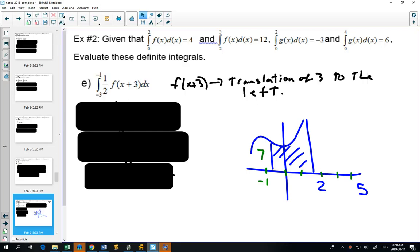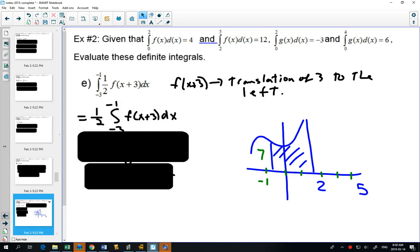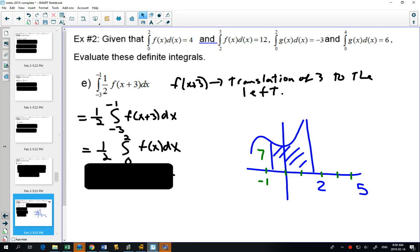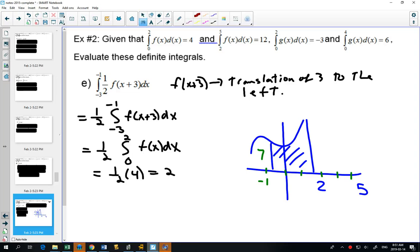So what we're going to think about in this one, we're going to think about that translating 3 to the left. We can bring the 1 half out in front, because that's a property. And so if it's been moved 3 to the left, and it's from minus 3 to minus 1, moving it back 3 to the right, f of x would have originally been between 0 and 2. And that was one of the ones that was given to us. The area from 0 to 2 was 4. 1 half times 4 is 2. So this is combining something you knew from before into the properties.